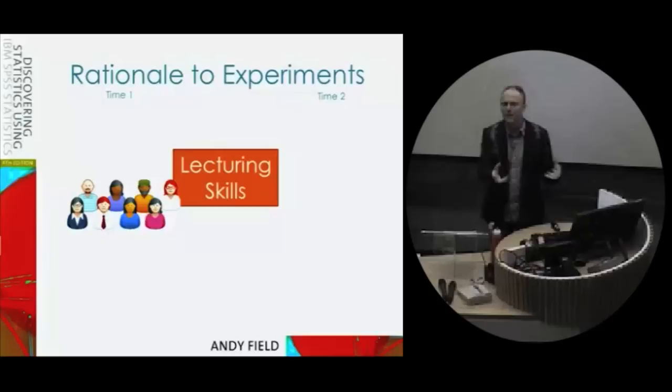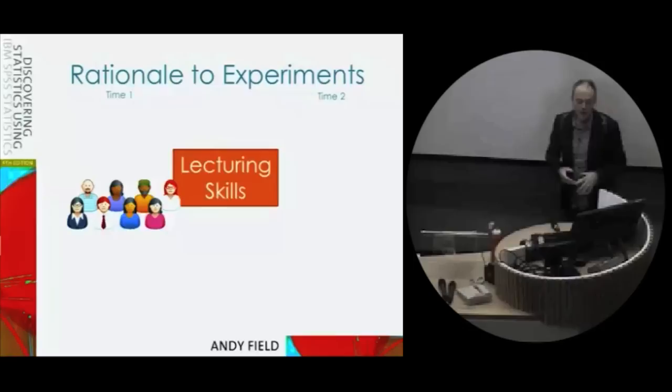With repeated measures designs we're using the same people over and over again. So if you wanted to take the Viagra example, that would mean giving people a placebo pill for a couple of weeks and then maybe switching them to a Viagra pill.